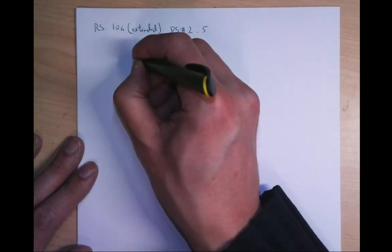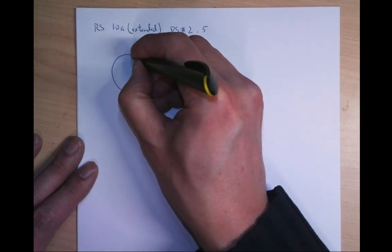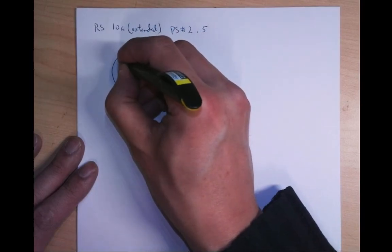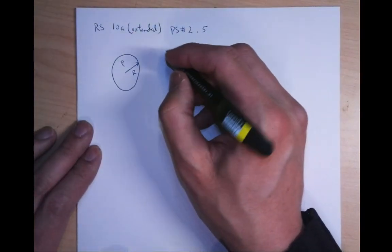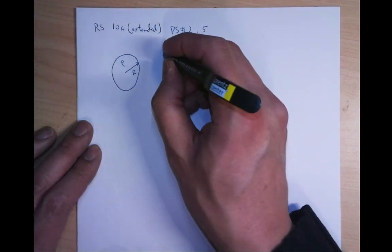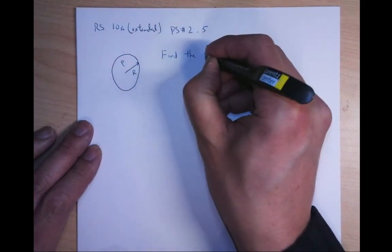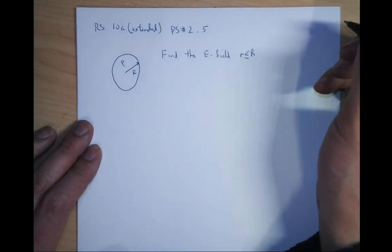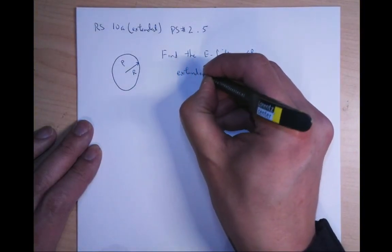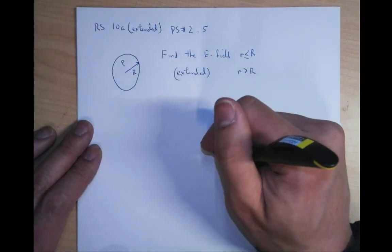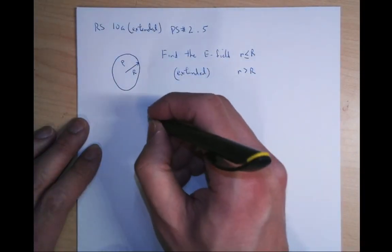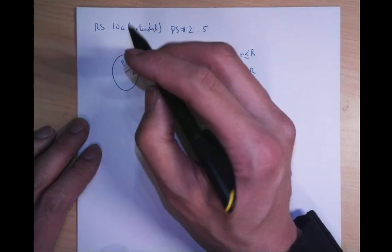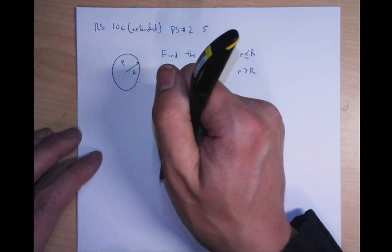We're starting with a solid sphere. Rather than telling you this is some charge Q, I'm going to tell you that this thing has a charge density of rho. What I want to do is find the electric field. We're going to do r bigger than R as well, so let's do both of them. The first thing to consider is how to solve this problem. This is a round thing, and whenever you have uniformly round things, you want to use Gauss's Law.